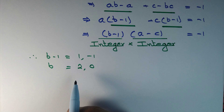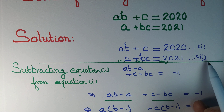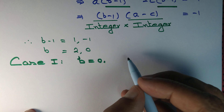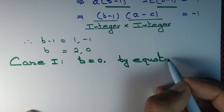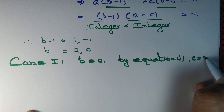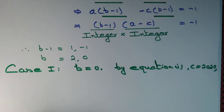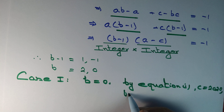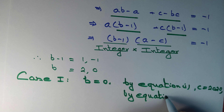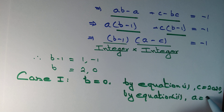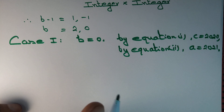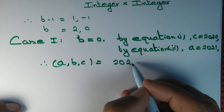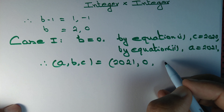Case 1: b = 0. Looking at equation 1, when b = 0, we get c = 2020. By equation 2, when b = 0, we get a = 2021. Therefore in this case, the solution is (a, b, c) = (2021, 0, 2020).